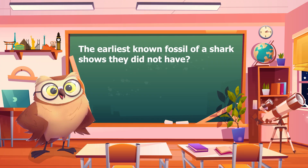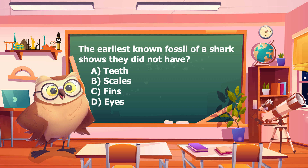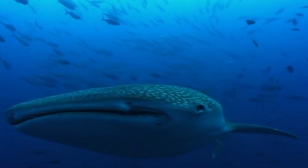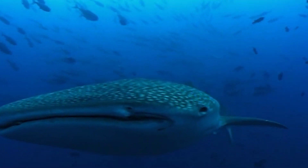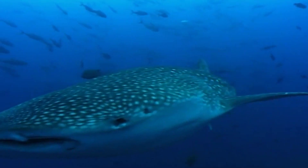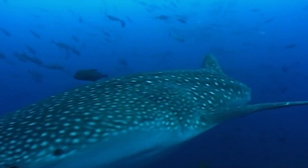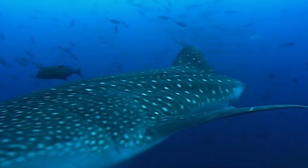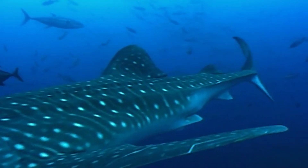And now, on to the results of our pop quiz. The earliest known fossil of a shark shows they did not have: teeth, scales, fins, or eyes? If you said A, teeth — congratulations, you were correct! Don't sweat it if you answered incorrectly. You can always try again in our next video. Thank you for joining us. See you next time on Feed My Curiosity. Take care.